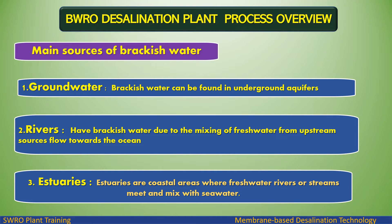The main sources of brackish water are: 1. Groundwater — brackish water can be found in underground aquifers. 2. Rivers — rivers have brackish water due to the mixing of fresh water from upstream sources flowing towards the ocean. 3. Estuaries — coastal areas where fresh water rivers or streams meet and mix with seawater.